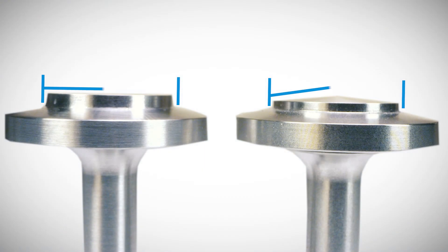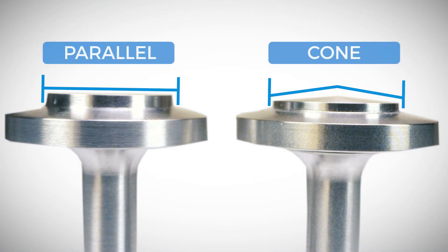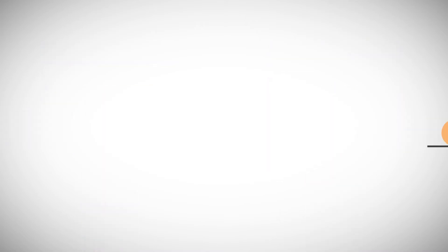TA offers several geometries including parallel plates and cones. Parallel plates are flat surfaces and cones are sloped surfaces with a truncated tip. While both geometries may be used to measure the viscosity of fluids, there are some key differences to consider.